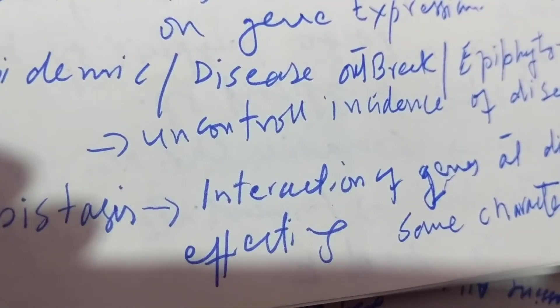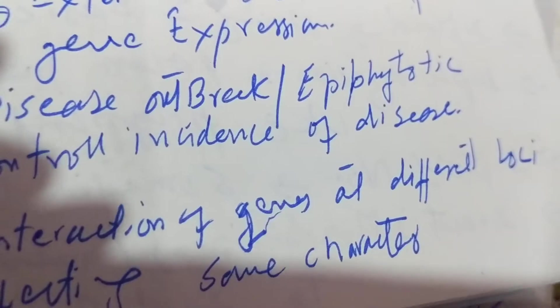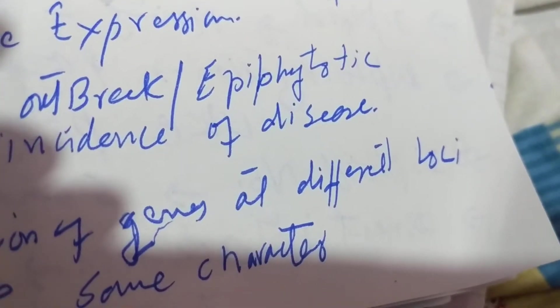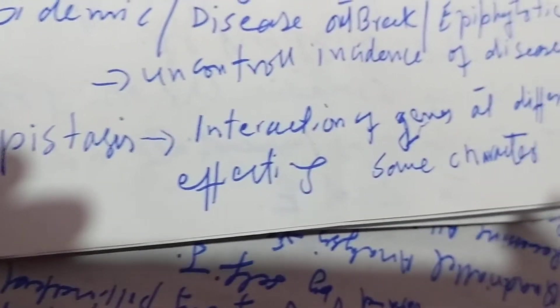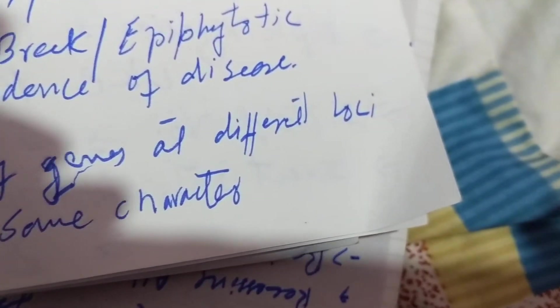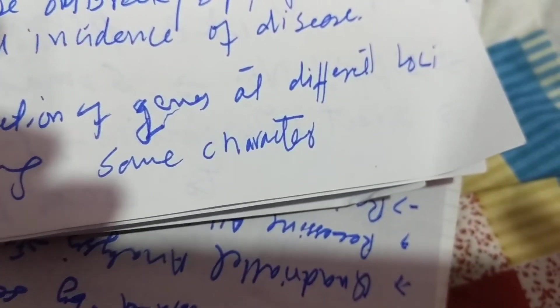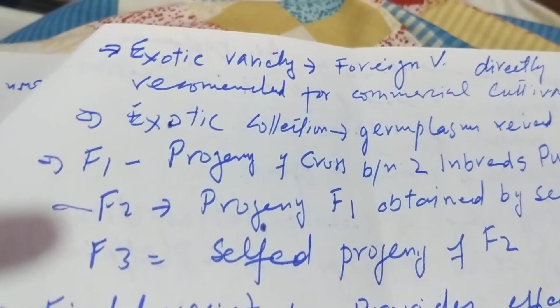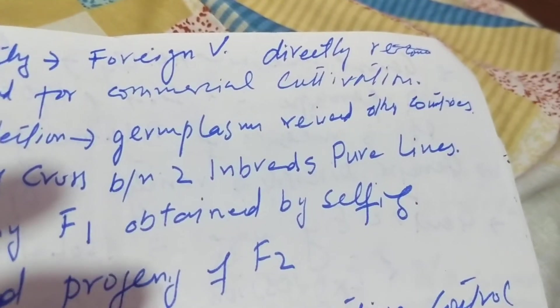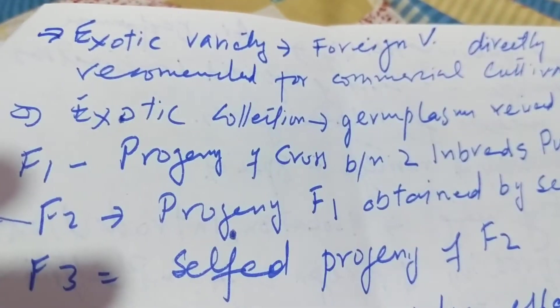Embryo is an immature plant in a seed, whereas environment refers to external conditions that influence gene expression. Epidemic is a disease outbreak. Epistasis is the interaction of genes at different loci affecting the same character.